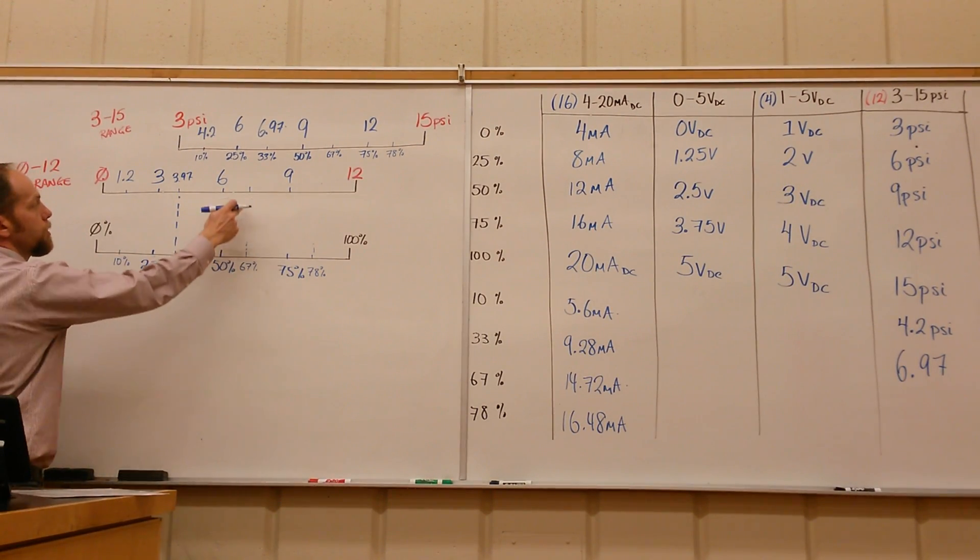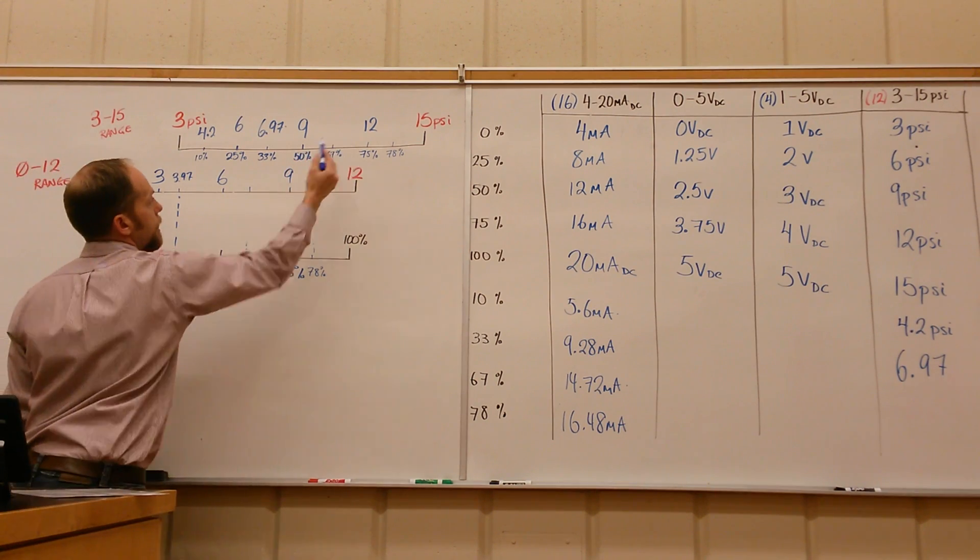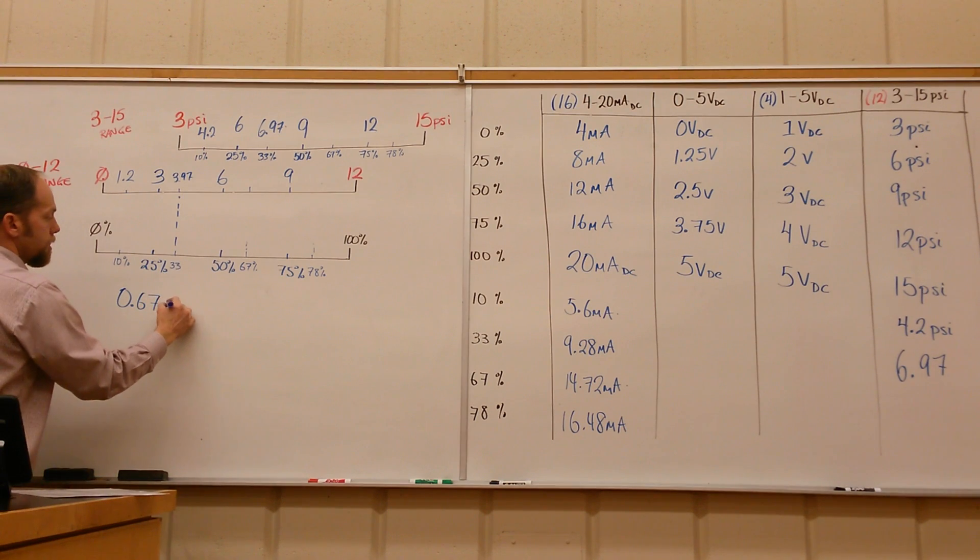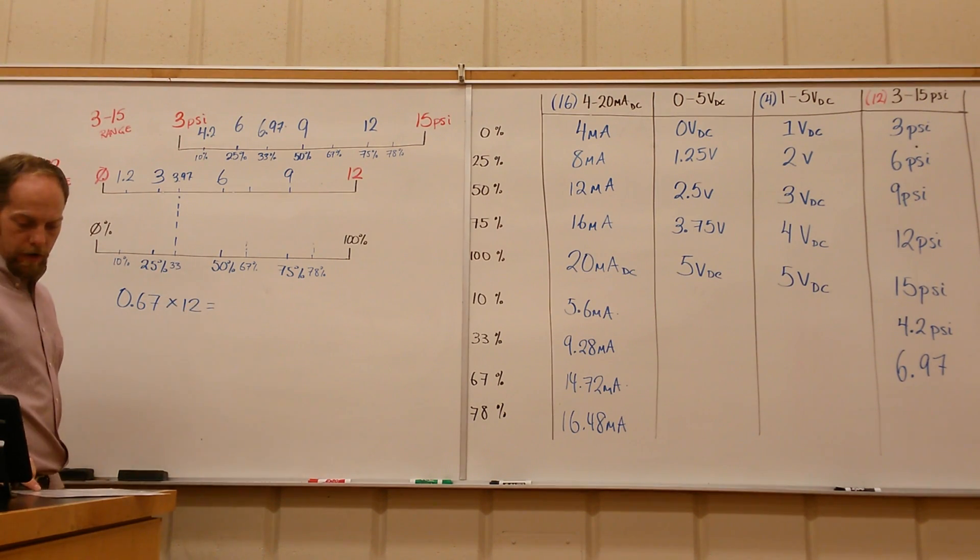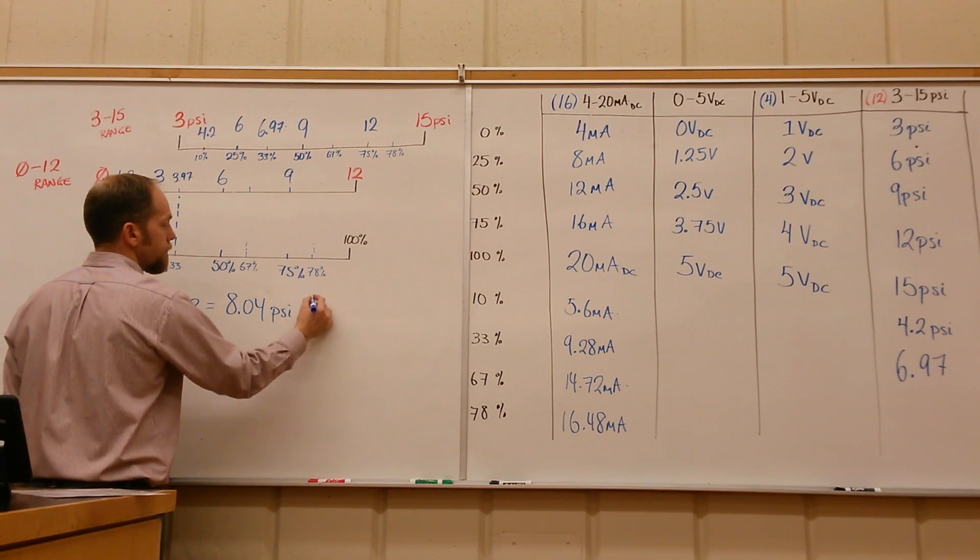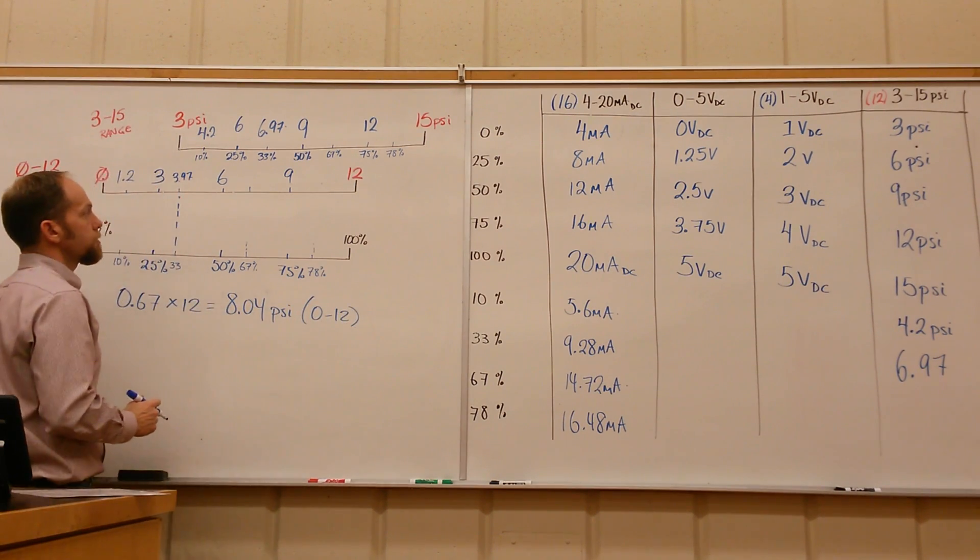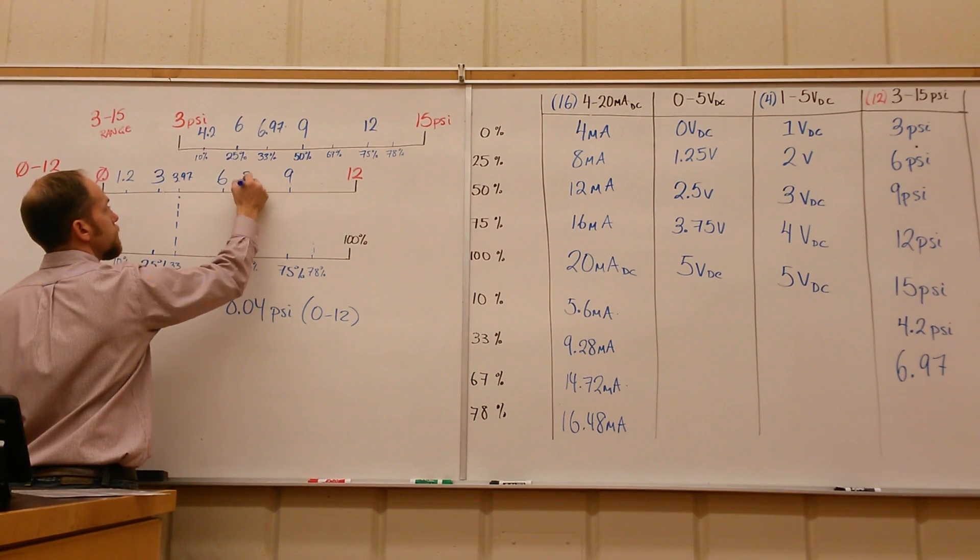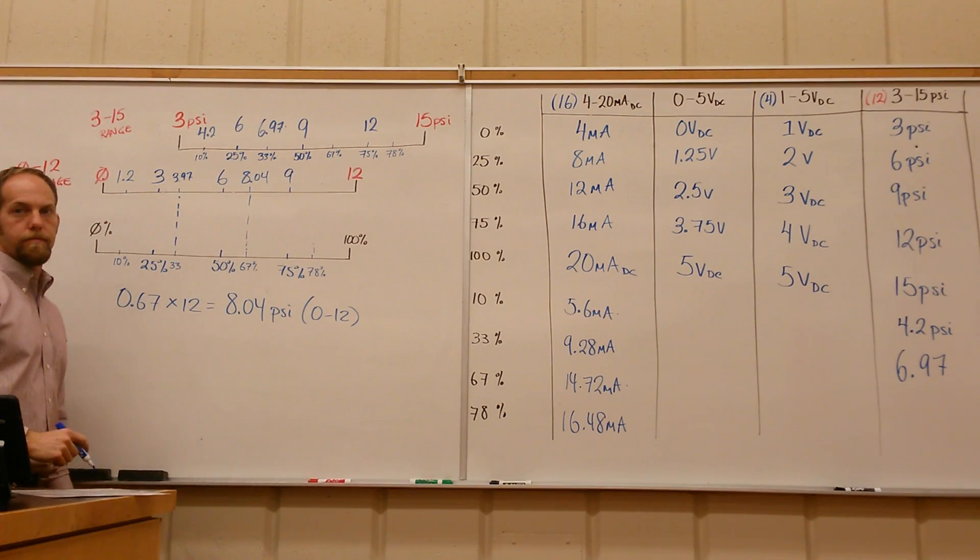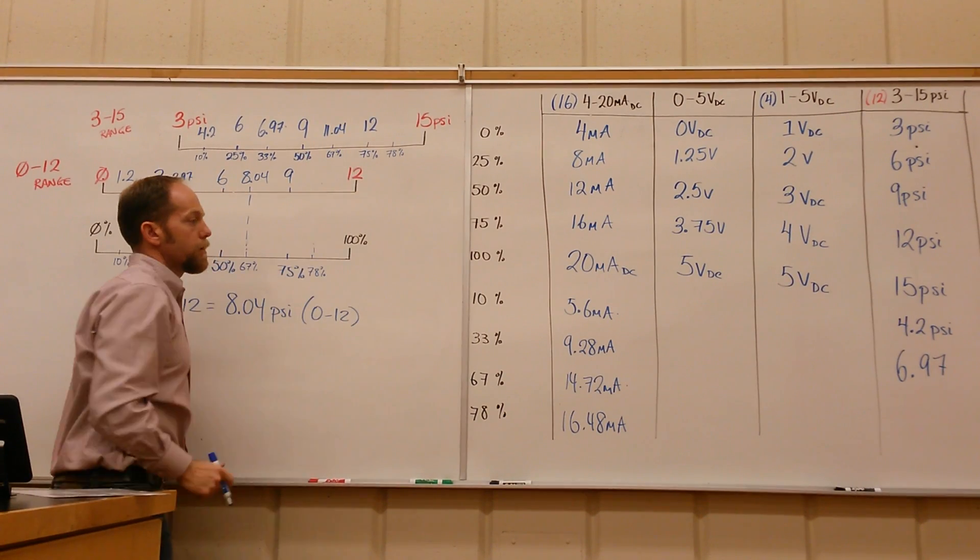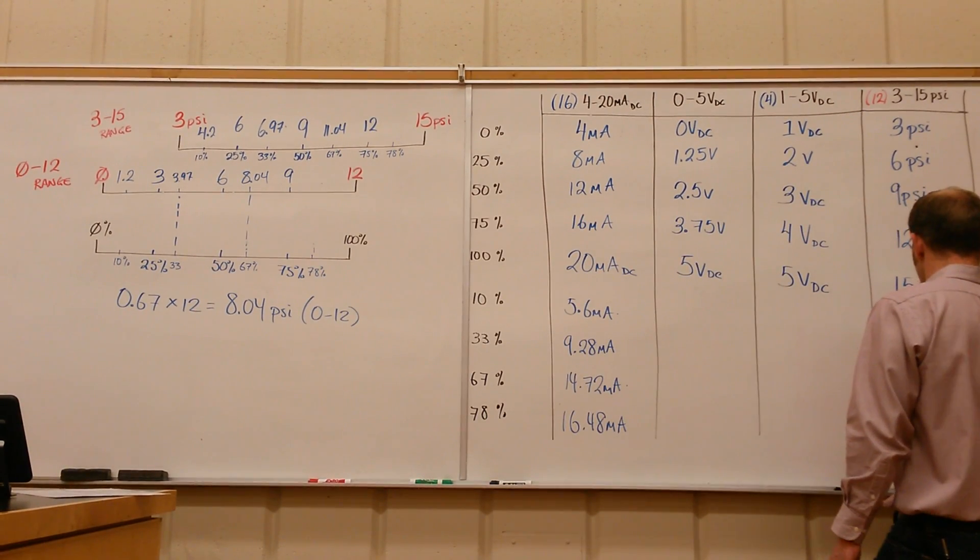67 looks like it's going to land between 6 and 9 on the 0 to 12, and between 9 and 12 on the 3 to 15. So if we take 0.67 times 12, that ends up giving us 8.04. That's on the 0 to 12 range. So 67% gives us 8.04 psi, and if we add 3 to that, it gives us 11.04.